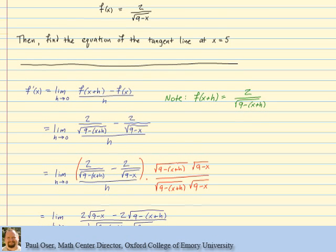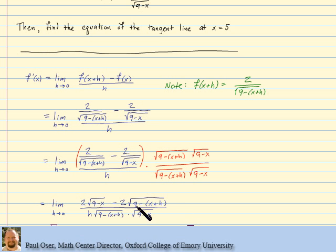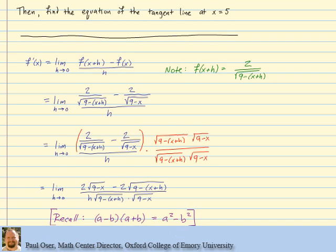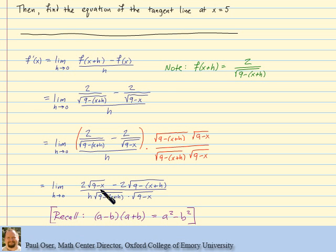Going ahead and doing that multiplication: this and this cancel off, leaving the 2 and square root of 9 minus x. This and this cancel off, leaving the 2 and this expression. Down on the bottom I just have those three factors. Now we've dealt with the fractions inside of fractions, so we should turn our attention to the presence of the square roots.